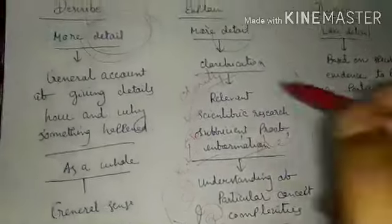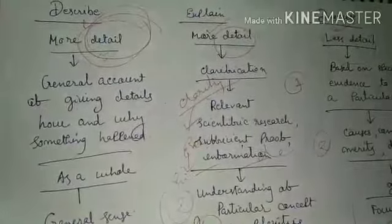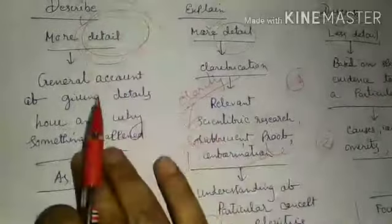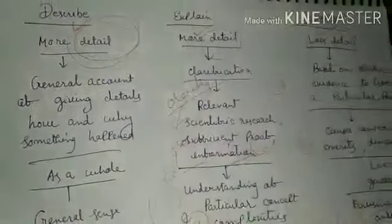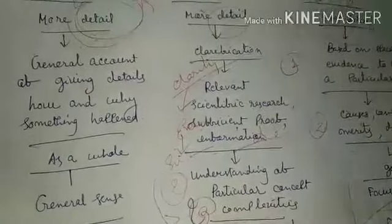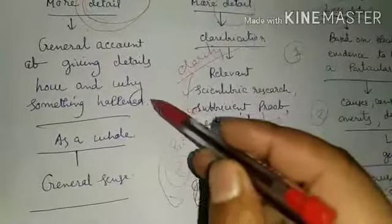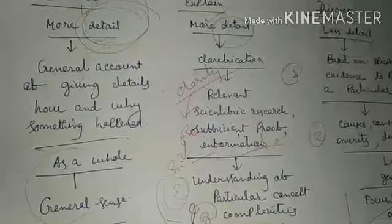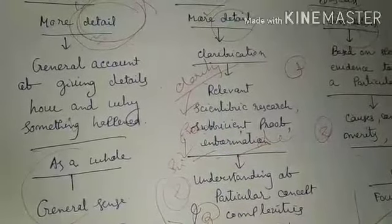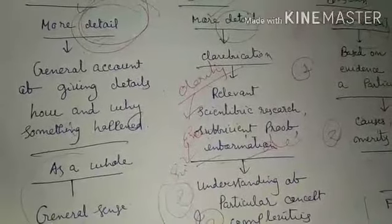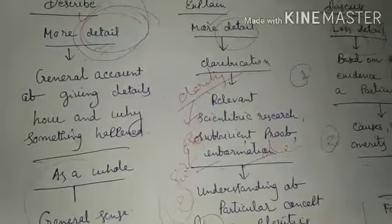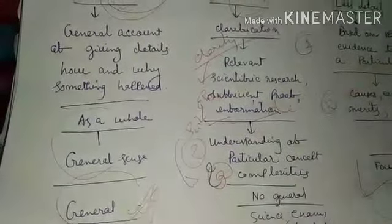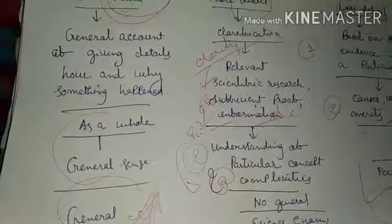Coming to 'describe': when we find the word describe, it means more detail in a general sense. We have to give an account of the incident — why it happens, how it happens, and at least simply put forward some solutions. We have to give as a whole, a general account of that particular incident, showing the causes or how it causes, and bringing up some solution. Describe means general — as a whole, we have to bring the causes or consequences.